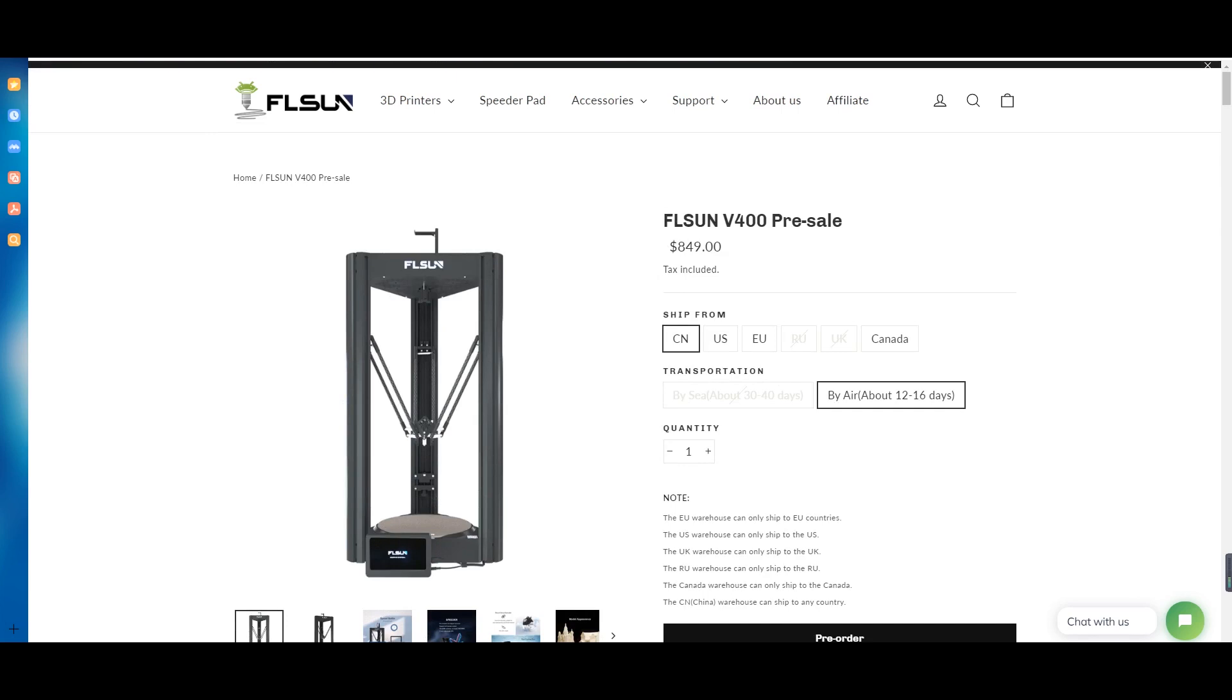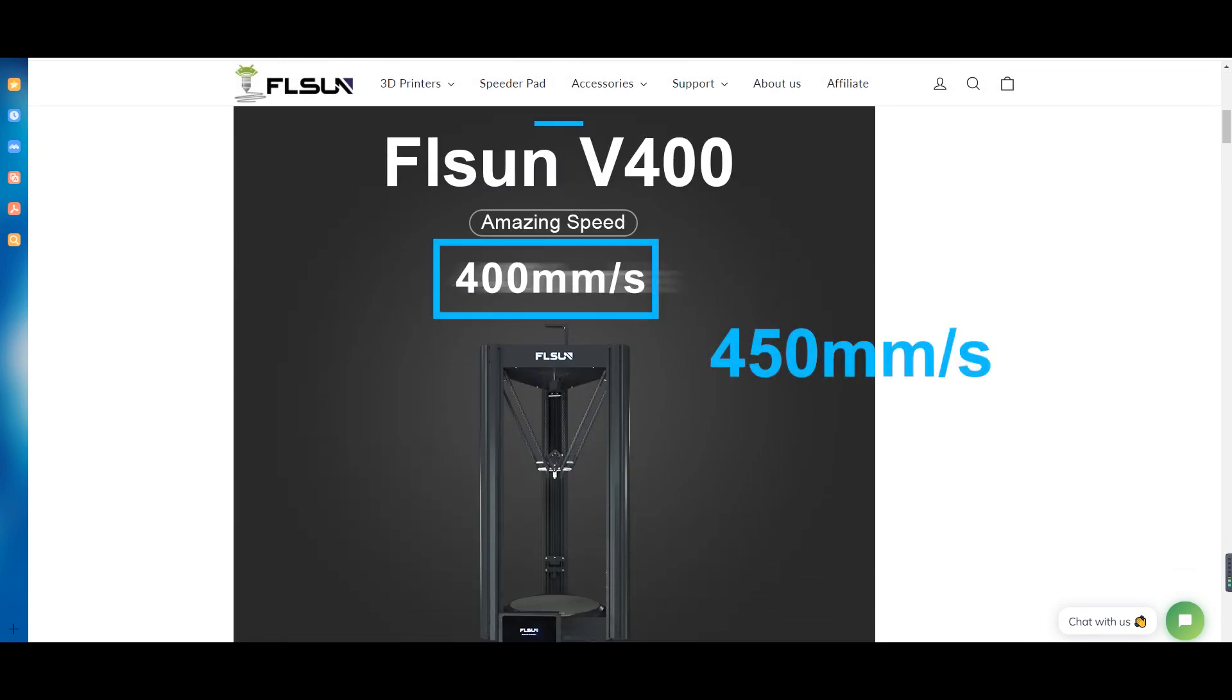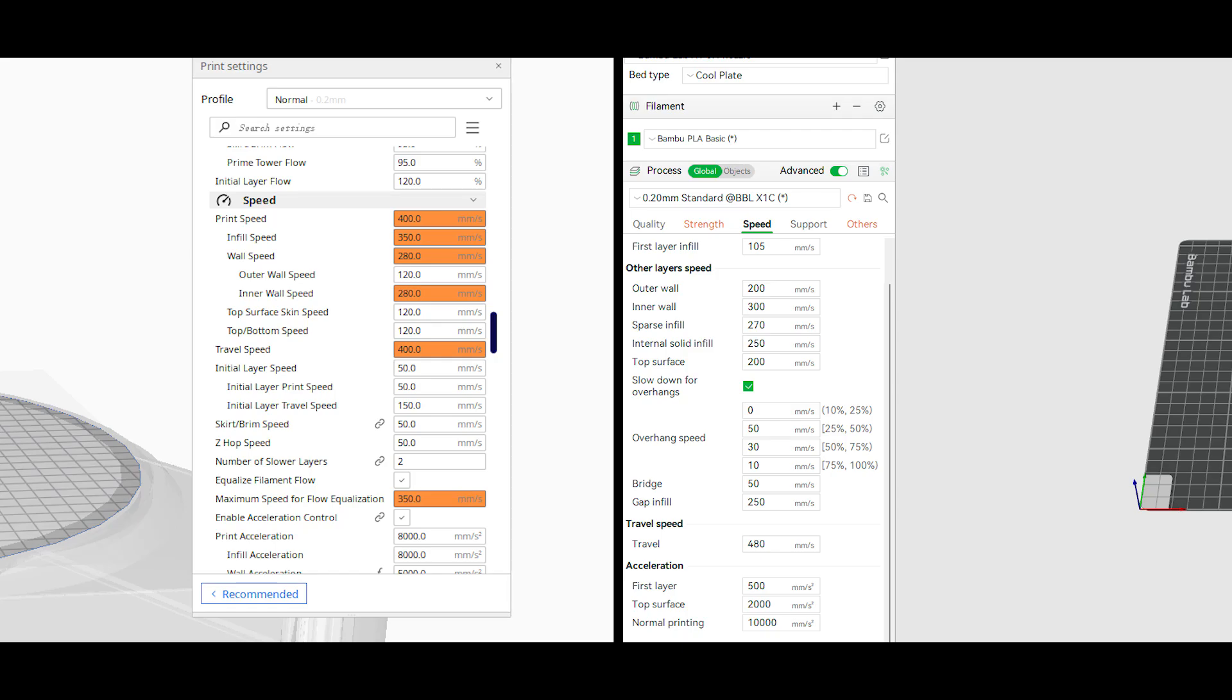But the nozzle melt rate of the V400 is relatively higher, and its maximum print speed is up to 450 millimeters per second. Third, as we print the same model with the default parameters sliced for both of them, you can see the X1 has higher inner and outer wall speed slicing parameters than the V400 and higher acceleration, while the V400 only has higher infill speed than the X1.